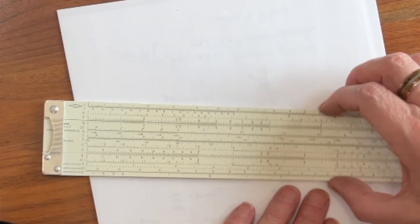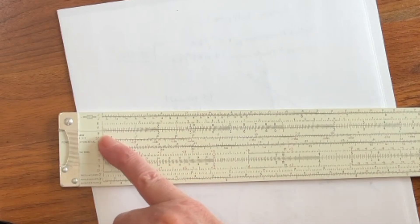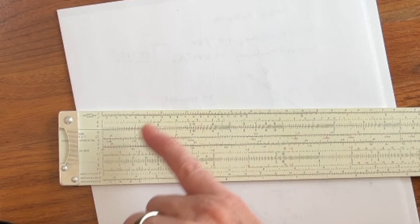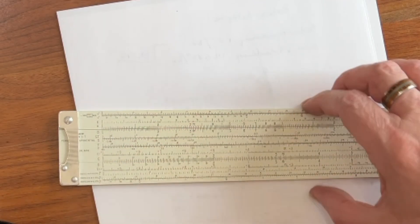First, let's learn a useful trick with the A-B scales. One thing that's very useful to know is that the A-B scales are exactly like the C-D scales, except they're half as long. So we can do everything on the A-B scales that we can do on the C scales in the same manner.